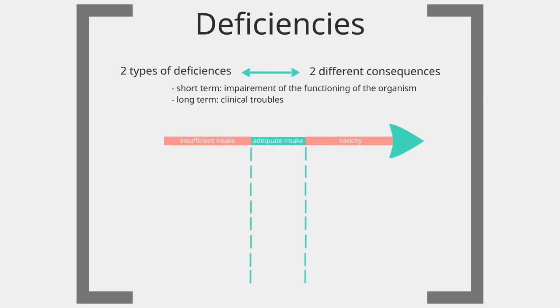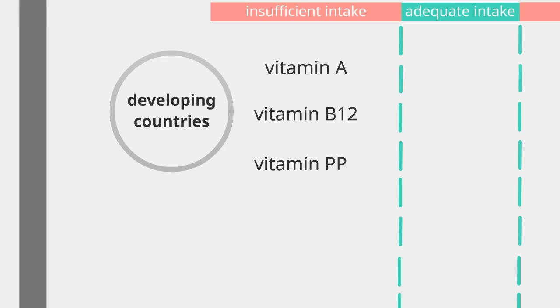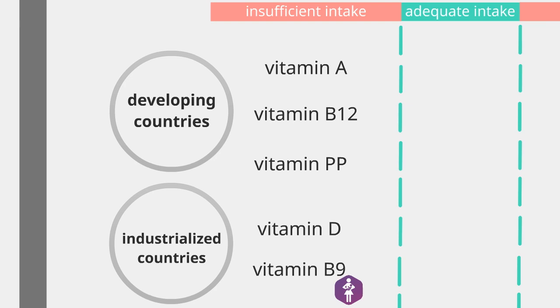The most widely spread deficiencies in developing countries are of vitamins A, B12, and PP. Among industrialized countries, there are deficiencies in vitamin D and vitamin B9, which are particularly important for child-bearing women.